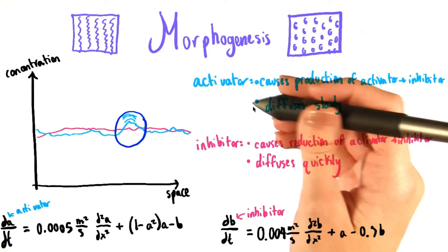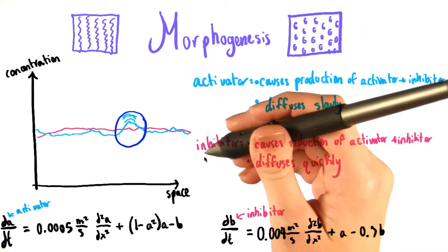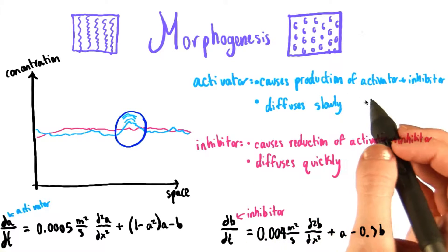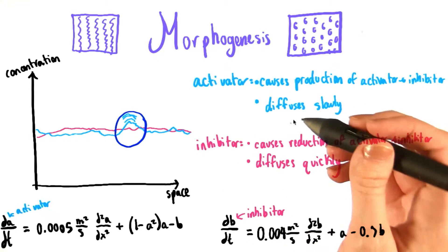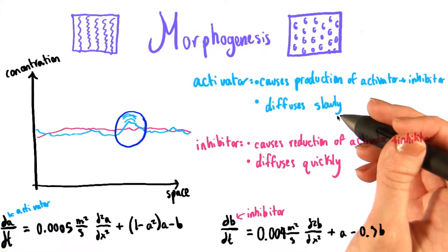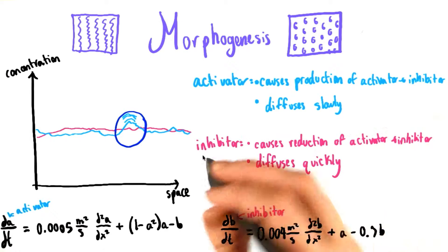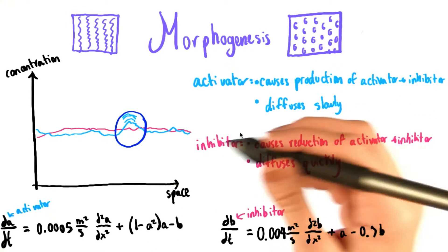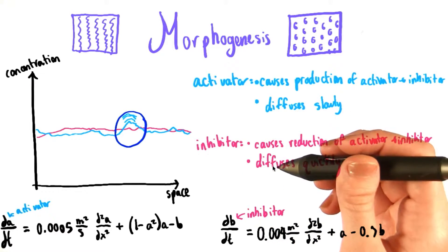Let's say that we have two different chemicals. We have one that we're going to call the activator, and one that we're going to call the inhibitor. And the activator causes production of both itself and of the inhibitor. And it also diffuses slowly through the space that we're considering. The inhibitor, on the other hand, causes a reduction of both the activator and itself. And it diffuses very quickly through the space.